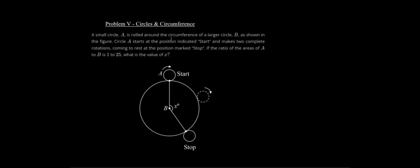A small circle A is rolled around the circumference of a larger circle B as shown in the figure. Circle A starts here and ends here, makes two complete rotations from here to here. The circumference is equal to 2πr.